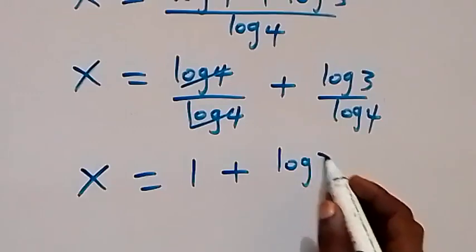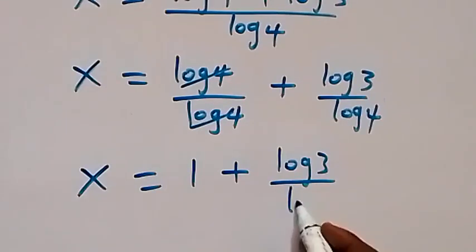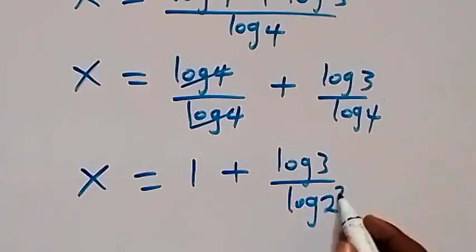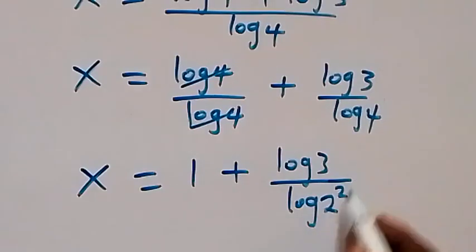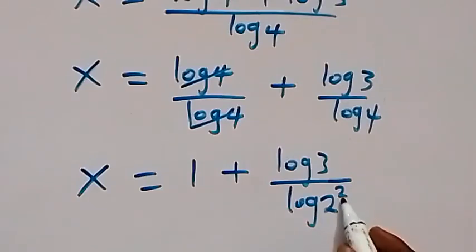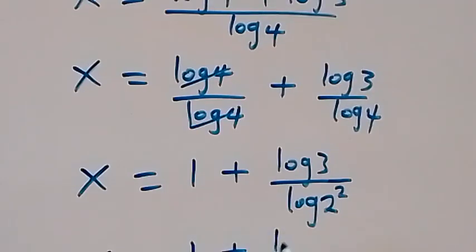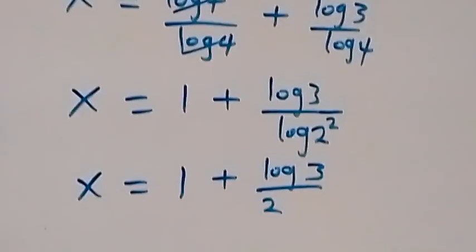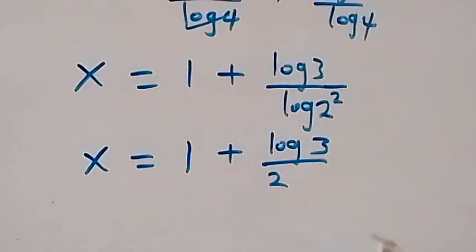We can write log 4 as log of 2 squared, and when we apply the power law, the 2 comes to the front. So we have x equals 1 plus log 3 over 2 log 2.